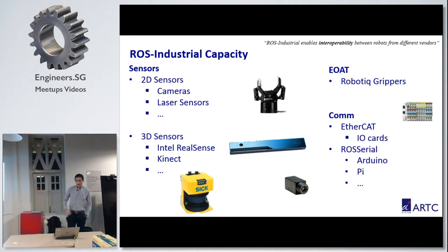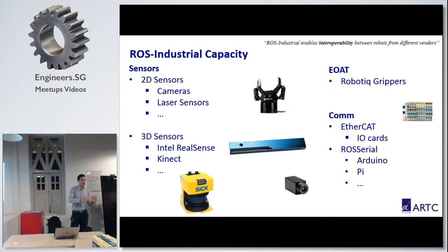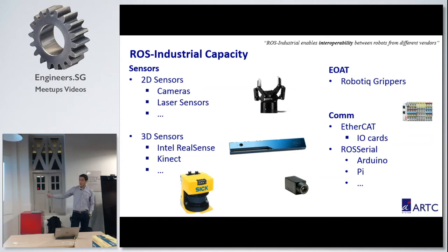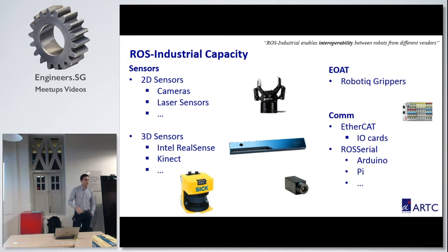We also want to have cheap devices that can communicate with the world. We have ROS serial - we all learned in high school or university how to use Arduino or Raspberry Pis. What is the best way to communicate from a heavy industrial robot to cheap environments? We can use ROS serial packages. Just one package, connect the USB, and you're reading topics from the Pi or from the Arduino as well.